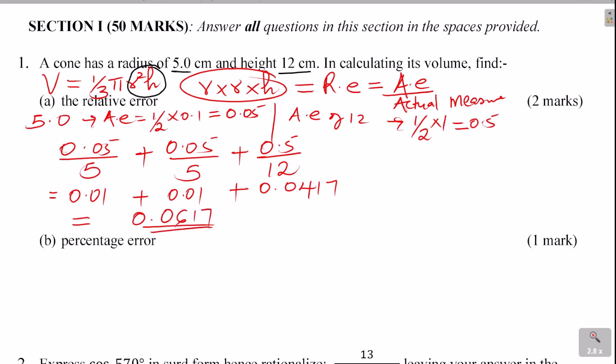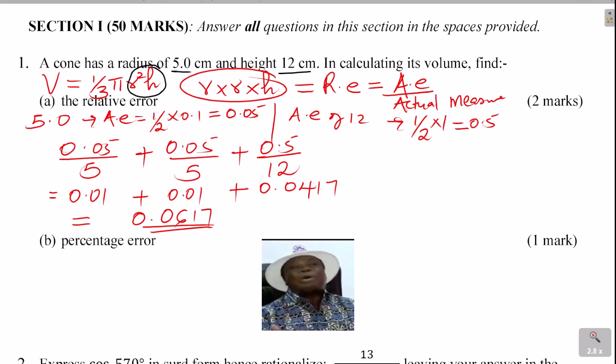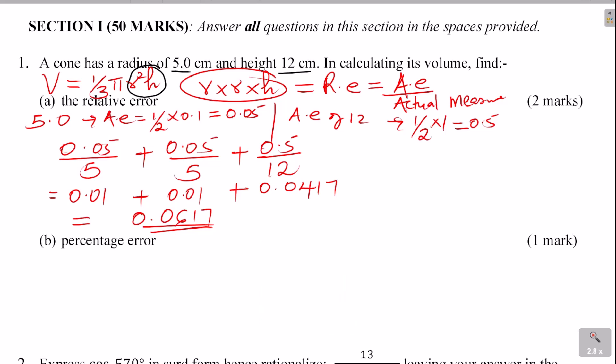That is how we get the relative error in calculating the volume. In simple terms, when multiplying measurements, get the sum of the relative errors of each of the measurements being multiplied.